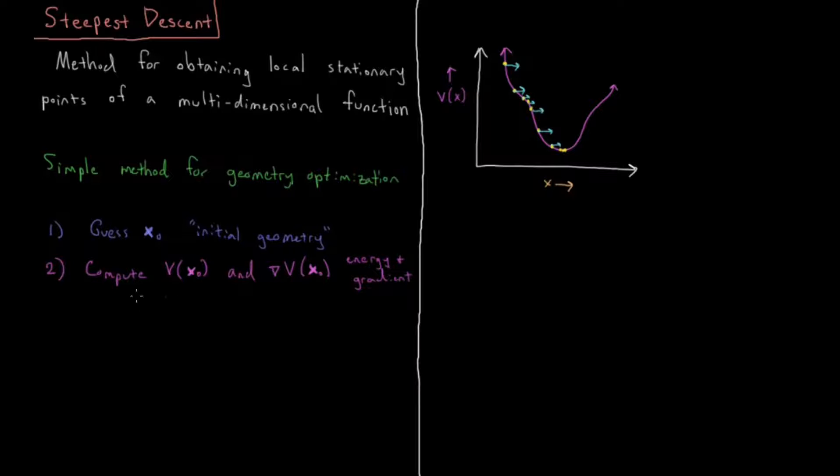Then given that energy and gradient, we're going to update our geometry. So x_{n+1} equals x_n minus gamma_n times del V of x_n. So this is our structure that we start with, and then it goes to a new structure. So the difference between the two is this displacement here.